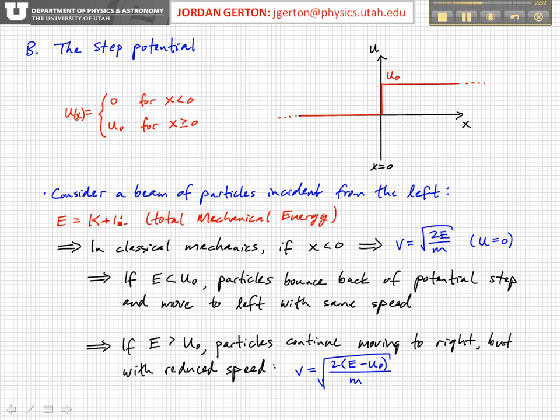In classical mechanics, if we consider the region where the potential energy is zero, then we would just have that the kinetic energy is equal to the total energy. So we have one-half mv squared equals the total energy, and so the velocity is equal to the square root of 2E over m.